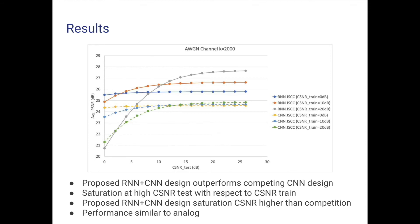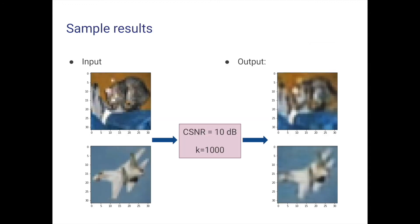Likewise, if the network was trained at a low CSNR, it suffers when tested at a high CSNR. Here we present some sample input and output images for a model trained and tested at CSNR=10 dB and k=1000 symbols. We see that the image can be pretty accurately reconstructed at the output — and recall that this is a regime where separate source and channel coding using JPEG compression was unable to communicate reliably.